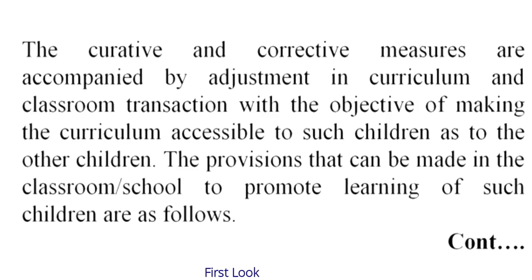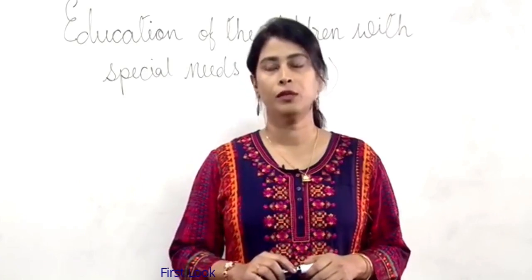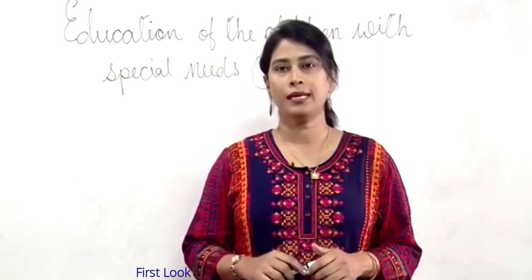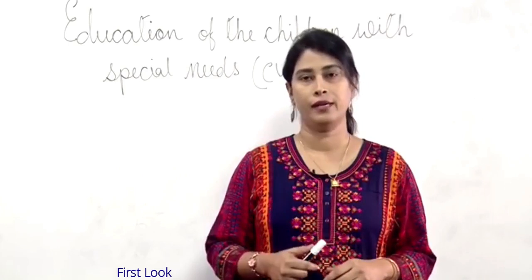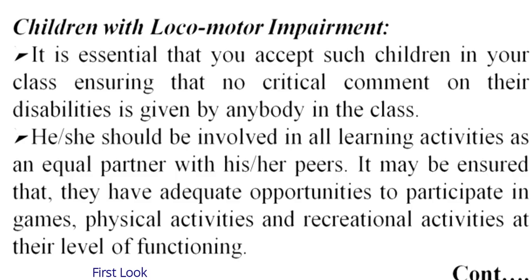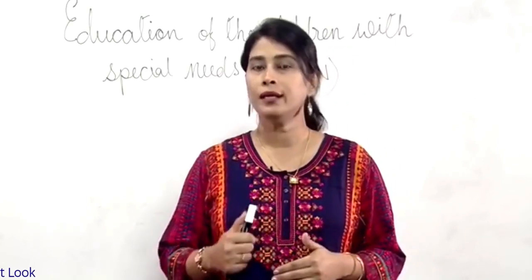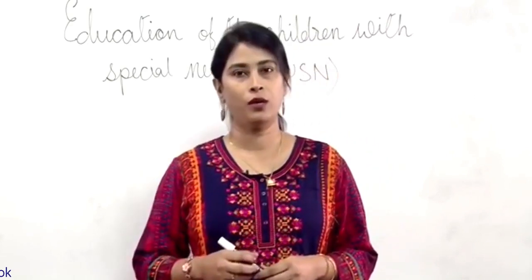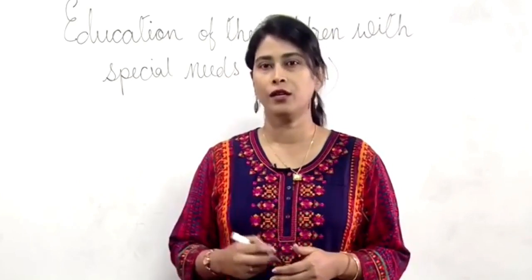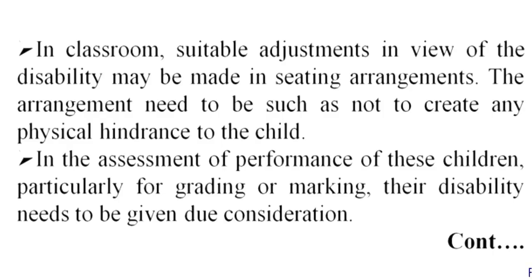The curative and corrective measures are accompanied by adjustment in curriculum and classroom transaction with the objective of making the curriculum accessible to such children as to the other children. The provision that can be made in the classroom or school is to promote learning of such children. For children with locomotor impairment, it is essential for you to accept such children in your class, ensuring that no critical comment on their disabilities is given by anybody in the class. He or she should be involved in all learning activities as an equal partner with his or her peers. It may be ensured that they have adequate opportunities to participate in games, physical activities and recreational activities at their level of functioning. In the classroom, suitable adjustment in view of the disability may be made in sitting arrangement.